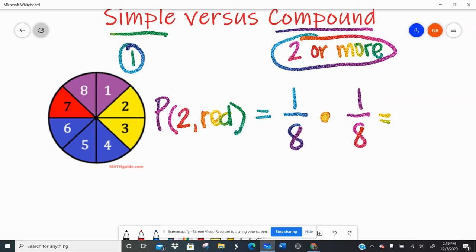So for compound, you take the probability of the first event times the probability of the second event. Think back to multiplying fractions. Top times the top, bottom times the bottom. So one over 64, which means if I spin the spinner 64 times, probably only one time I'll get this combination. Well, if I want to change that to a percent, I do one divided by 64 times 100. And if I round it to the hundredths place, I have a 1.56% chance of spinning a two and then spinning a red. So compound probability.